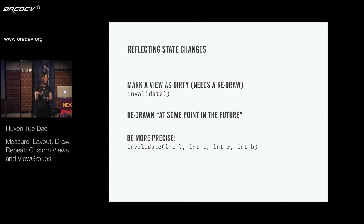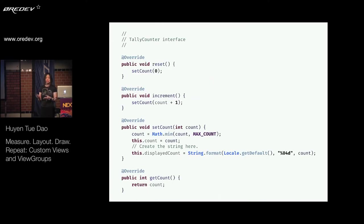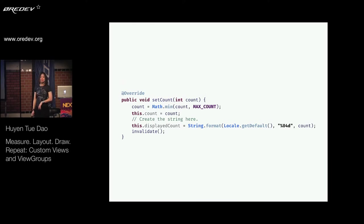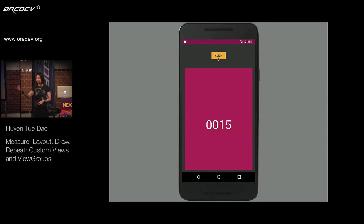It doesn't happen immediately, just the next time that measure-layout-draw happens. There's also another version of invalidate that takes a bounding box of left, right, top, and bottom, allowing you to be more precise. Android is actually pretty good these days about optimizing drawing calls, but you can give it a little more help by saying this specific region of my view is dirty, which helps Android optimize that process even further. To fix my tally counter, all I have to do is add invalidate() in the setCount method after recording the count. As soon as I add that one method call and run the application, clicking the button now works. It's a pretty simple process — just something you have to remember to do. Remember to draw, reflect state, and make sure you invalidate whenever something changes.